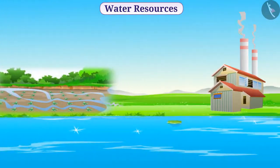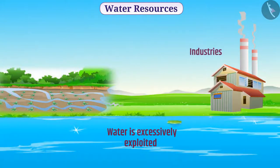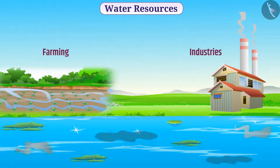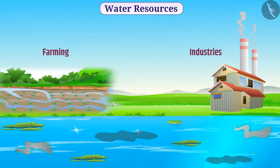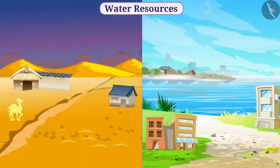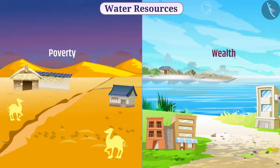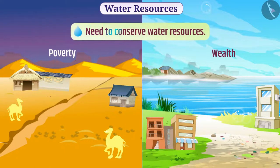Water is excessively exploited in industries and farming. Similarly, water pollution is also increasing due to various reasons. Due to many such reasons, the amount of available water has decreased. Absence of water is also closely related to poverty. Therefore, we need to conserve water resources.